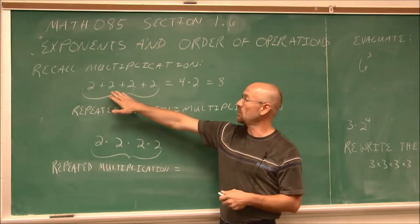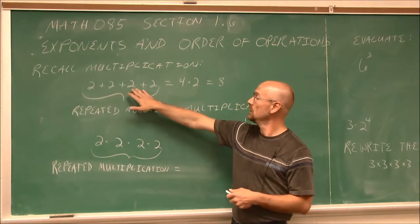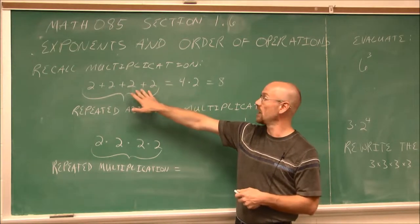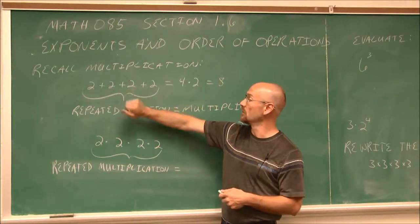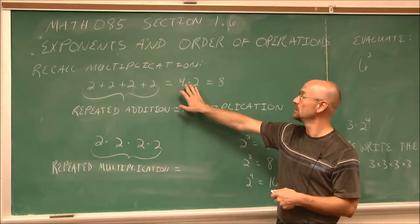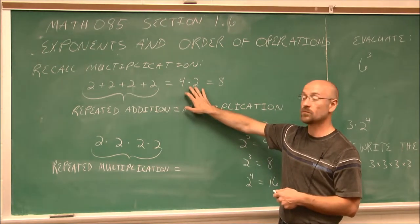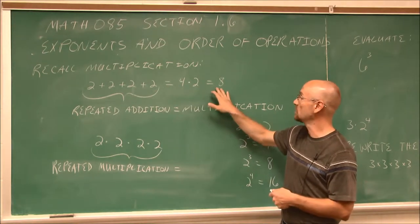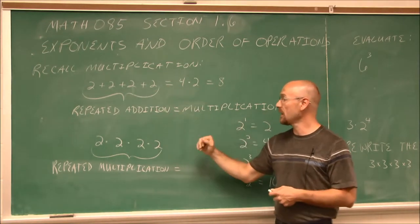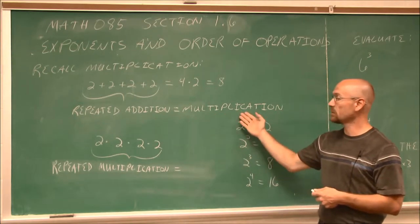In this example, we have 2, and we're going to add it to itself — a total of 4 of them. So we could say 4 times 2. 4 times 2 is 8. So repeated addition is multiplication.